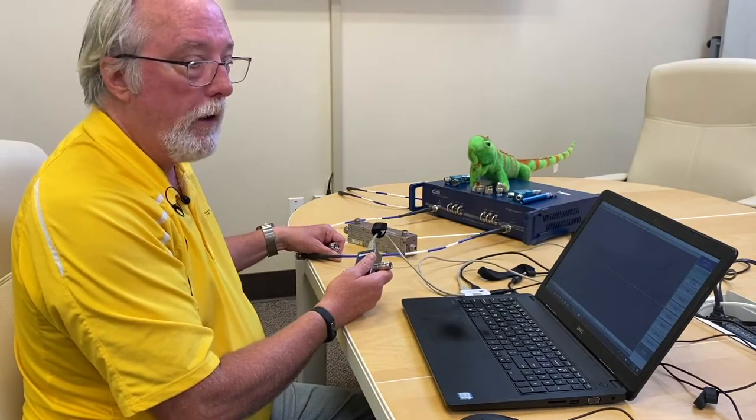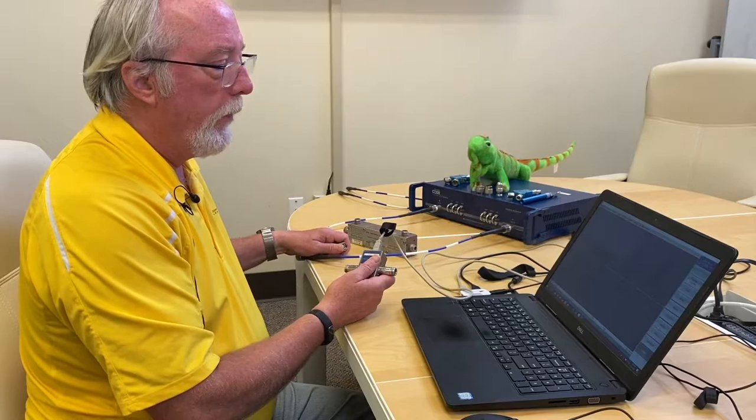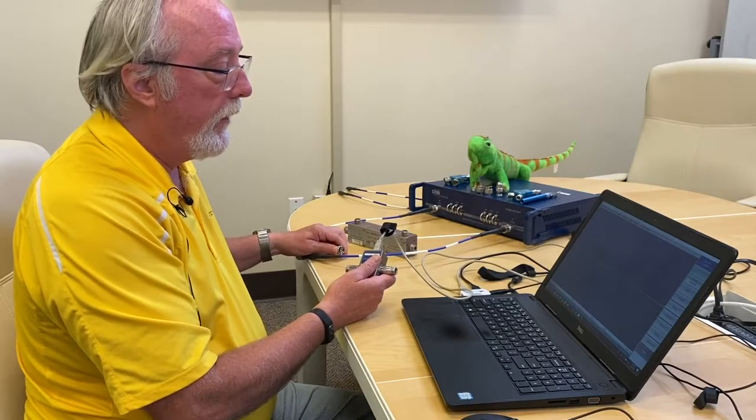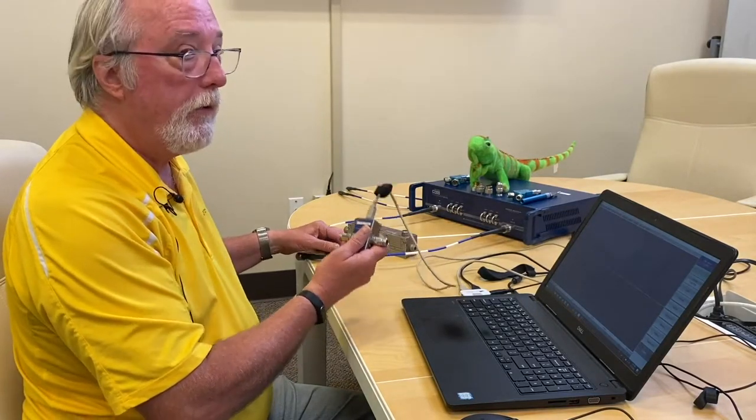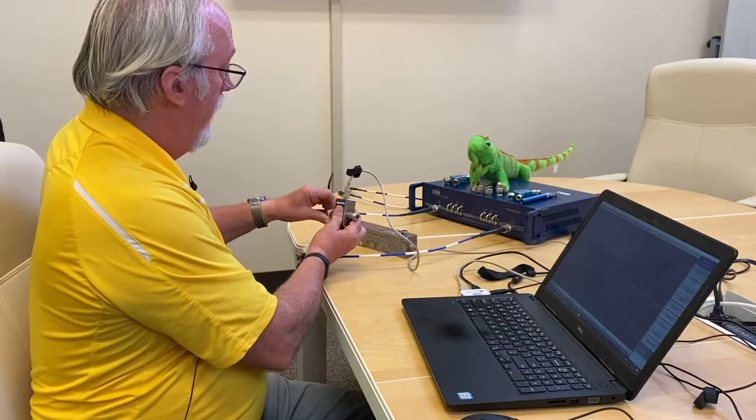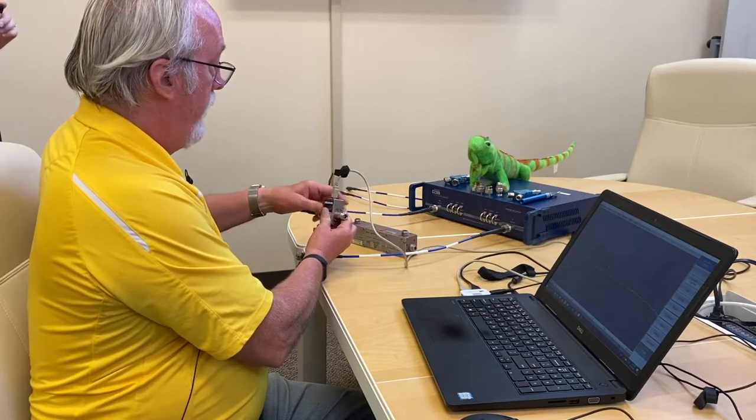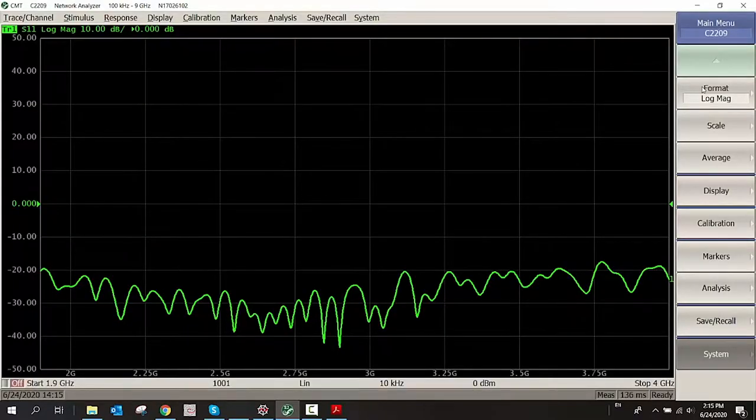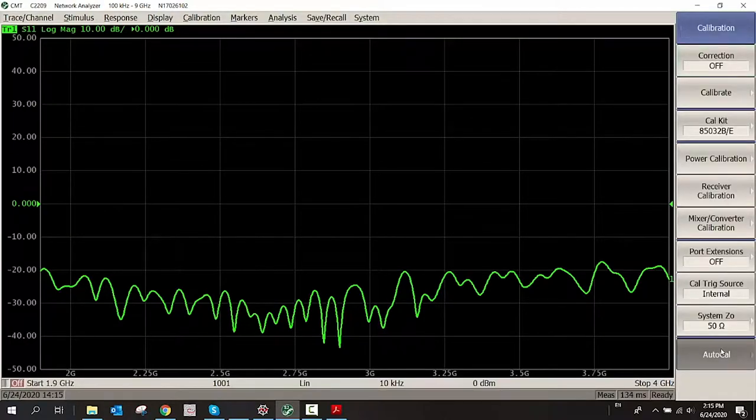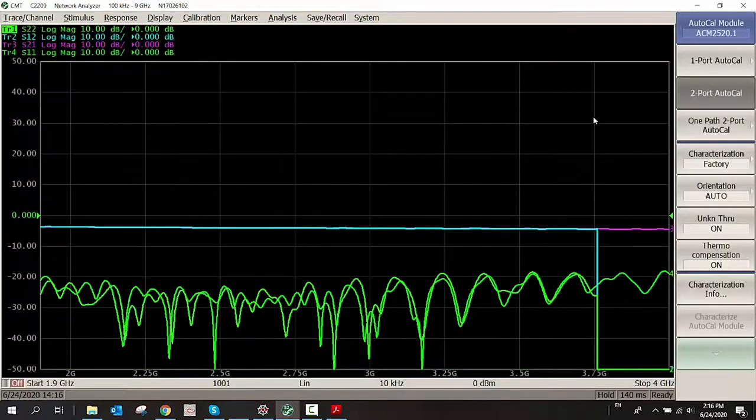Then I'm going to use this automatic calibration module to calibrate the VNA. And I'm using this for two reasons. One, it's very fast. And two, it gives a superior calibration compared to any other method. If you used a SOLT calibration kit, the results you get from the VNA will not be as good as you get with an automatic calibration module. So I'll attach it and do my calibration. Auto-Cal, two-port Cal. And it's done.